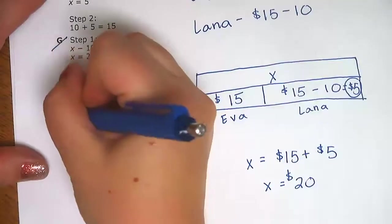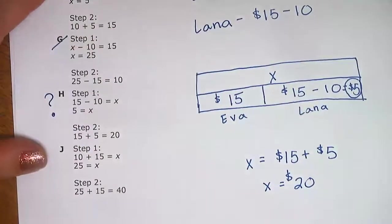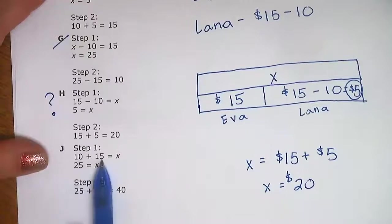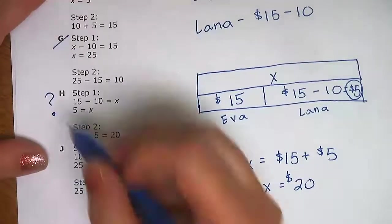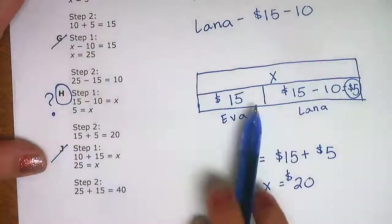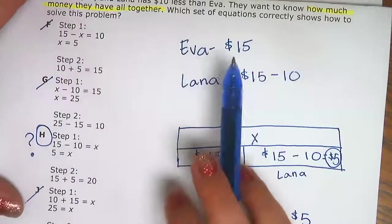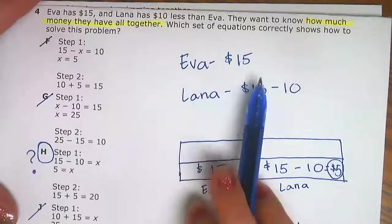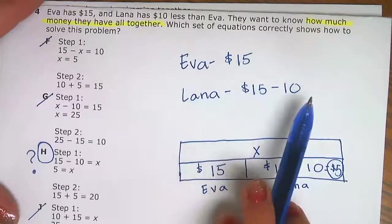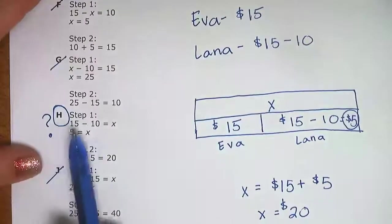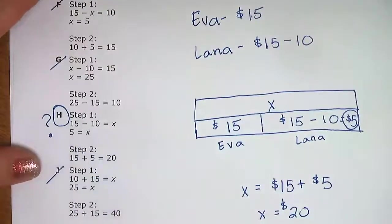Let's check choice J. For step one it says 10 plus 15, but we didn't add those first. So our best choice is H. By using the strip diagram and jotting down the information as we read — turning the words into quick math sentences — we were able to match our process with the answer choice processes.